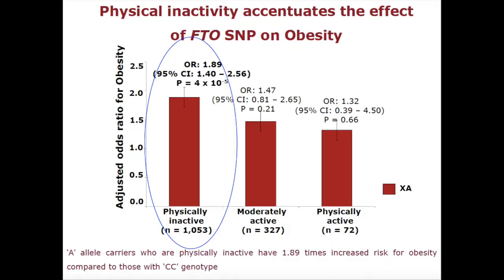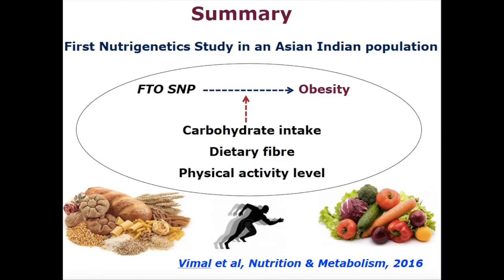In terms of translating this nutrigenetics finding to personalized nutrition: what would be the appropriate strategy? For people carrying two copies, the personalized strategy would be providing a diet low in carbohydrates, high in dietary fiber, and suggesting higher levels of physical activity. That will be an effective strategy to overcome obesity in the future. They might not be obese at this stage, but they can prevent the development of obesity. Prevention is better than cure — that is the key concept behind personalized nutrition. Personalized nutrition is not only for people who already have a health issue; healthy people can also make sure they overcome the genetic risk of obesity, diabetes, or any disease.